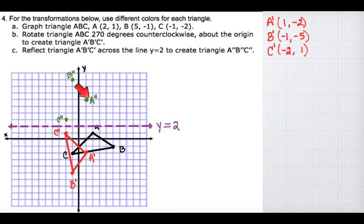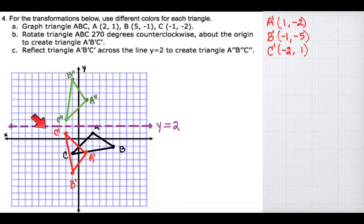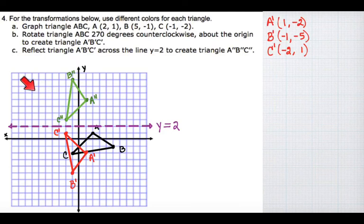Here's my reflected triangle. Here we have A double prime, B double prime, C double prime — reflected across y equals 2 from A prime B prime C prime. That's part C.